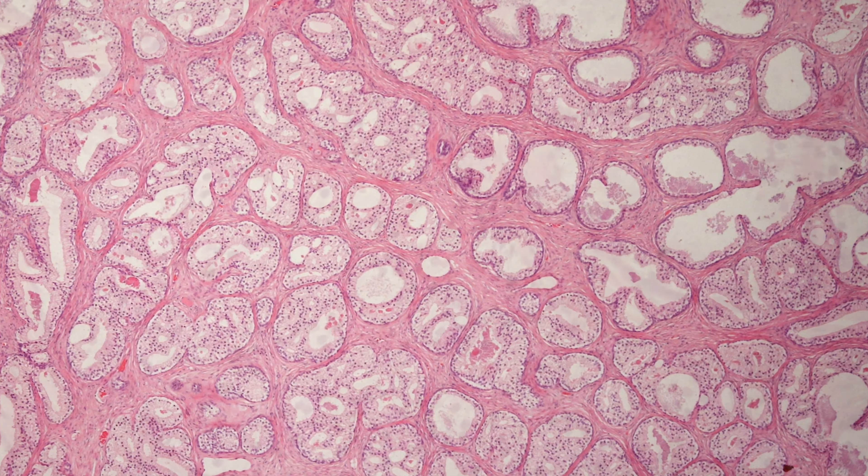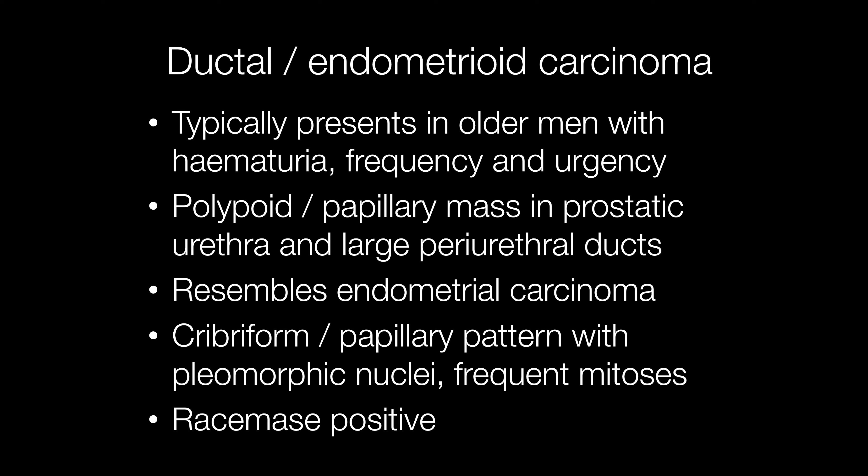The clue to the diagnosis in case number four is the history. This was a male of 75 who presented with hematuria and had a fronded lesion in the prostatic urethra at cystoscopy. The diagnosis is invasive ductal or endometrioid adenocarcinoma. This tumour typically presents with hematuria, frequency and urgency in older men. Grossly there is a polypoid or papillary mass in the prostatic urethra and large periurethral ducts. The tumour resembles endometrioid endometrial adenocarcinoma of the uterus, with a cribriform or papillary pattern, pleomorphic nuclei, and frequent mitotic figures. In common with acinar adenocarcinoma of the prostate, AMACR is positive.